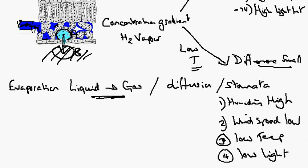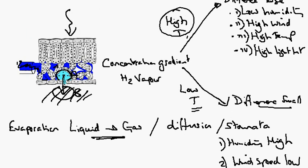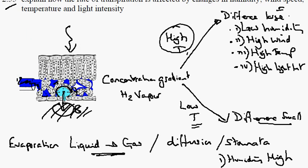So the key features of understanding the rate of transpiration is the difference between the concentration of water vapor here and here. And how humidity, wind speed, temperature, and light intensity affect transpiration depends upon creating small and large differences here.